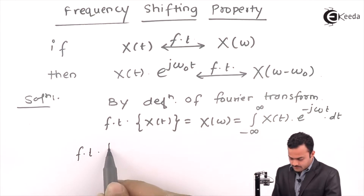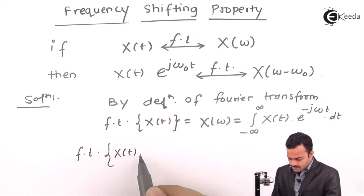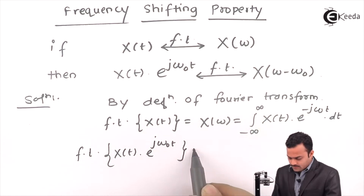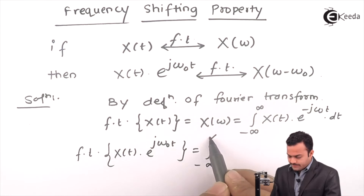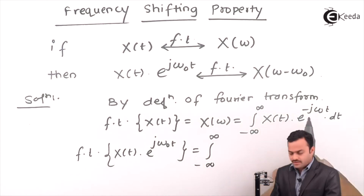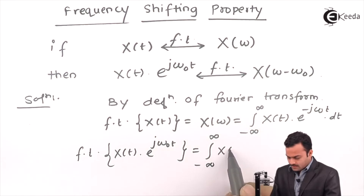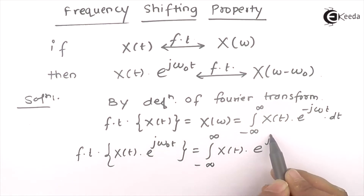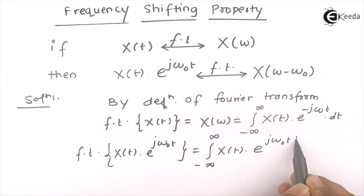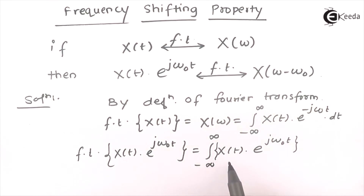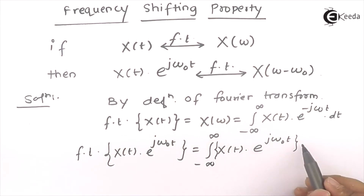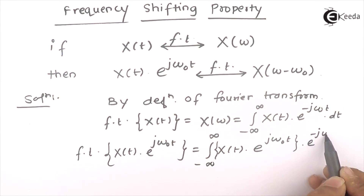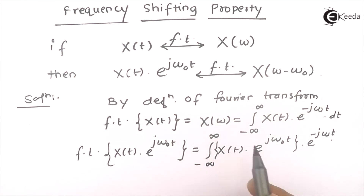So, the Fourier transform of x(t) multiplied by e raised to j·ω₀·t, by definition, will be given by the integral from minus infinity to infinity. Instead of just x(t), we substitute x(t) into e raised to j·ω₀·t. This will be our function, because for the Fourier transform we need to find it, and the signal gets multiplied with e raised to minus j·ω·t. So we will get the Fourier transform of x(t) into e raised to j·ω₀·t.